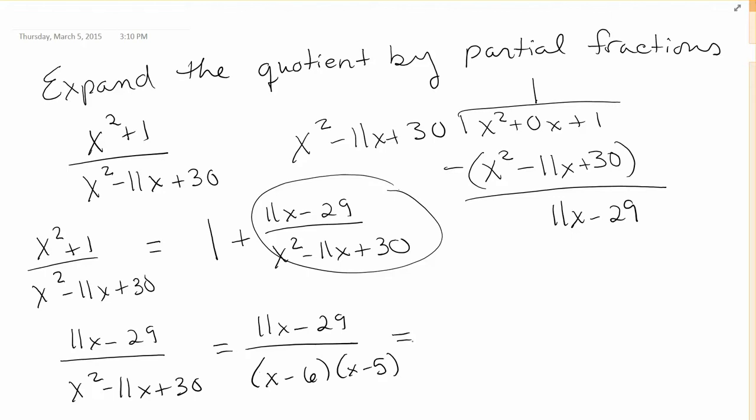So the idea here is to say what two fractions were added together so that the numerator was 11x minus 29. Since our denominator is factored, we know that it's a over x minus 6, some number a over x minus 6 plus some number b over x minus 5, that when you got a common denominator and you add and collect like terms, you got the 11x minus 29 in the numerator.